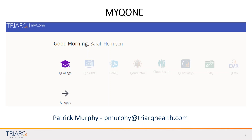Your login would be your email address that you use and have set up with us, and then Q College 2019 exclamation point. There was an email sent out earlier this week that broke down the announcement and also how practice users can use that. If you need a resend, there'll be an email at the end of this webinar. All currently active Triarch accounts — the primary contact has access. We'll show you at the end of the webinar how you can add additional users to Q College and MyQ1.